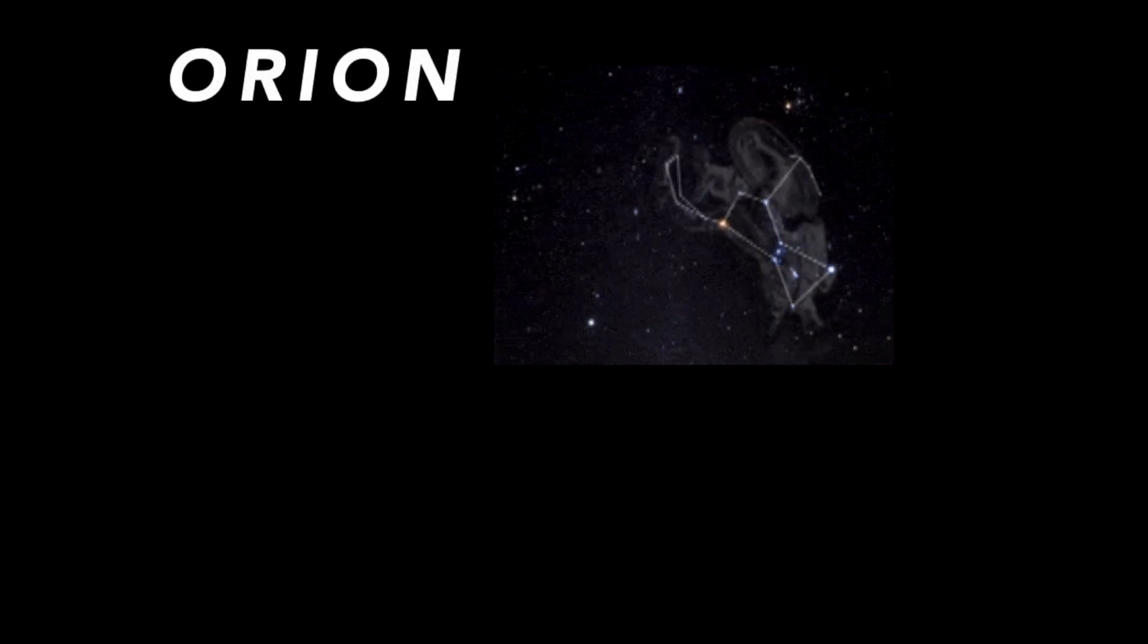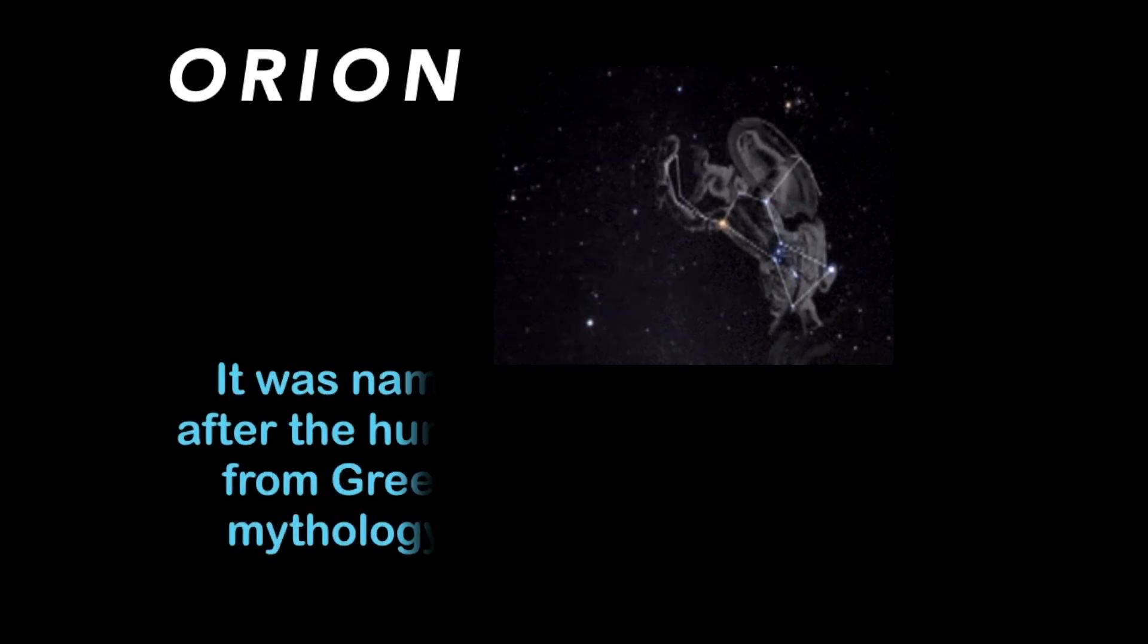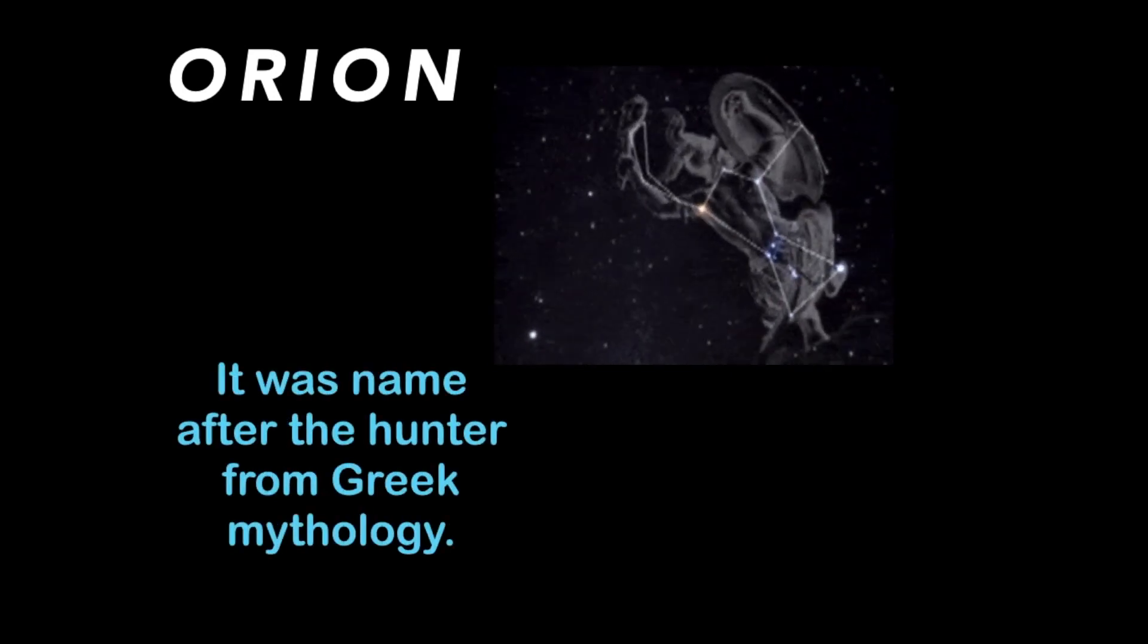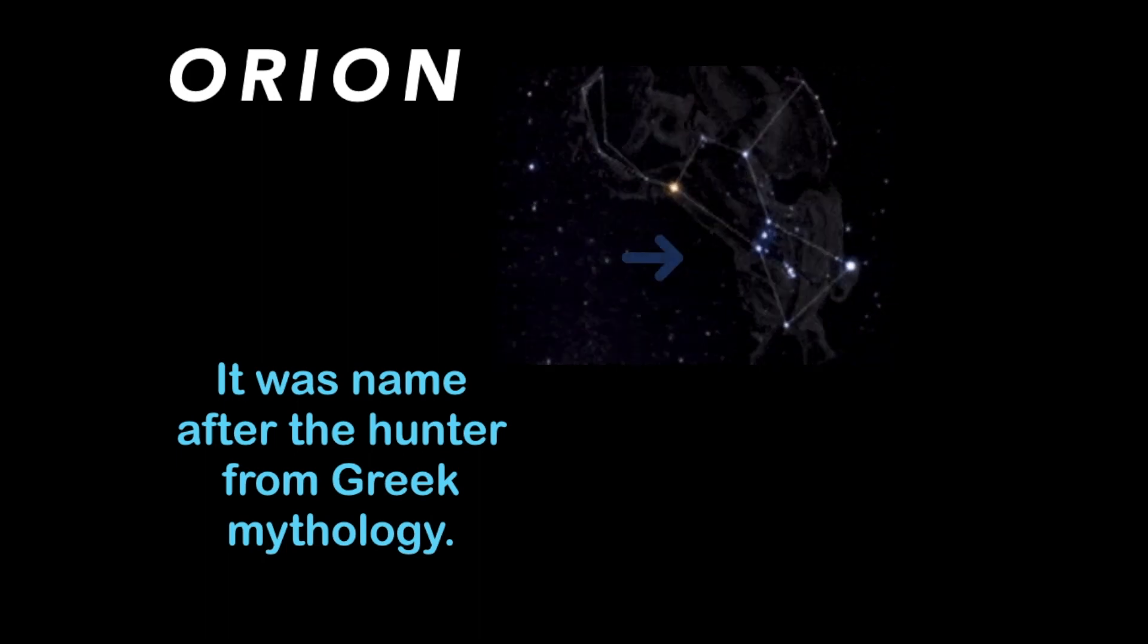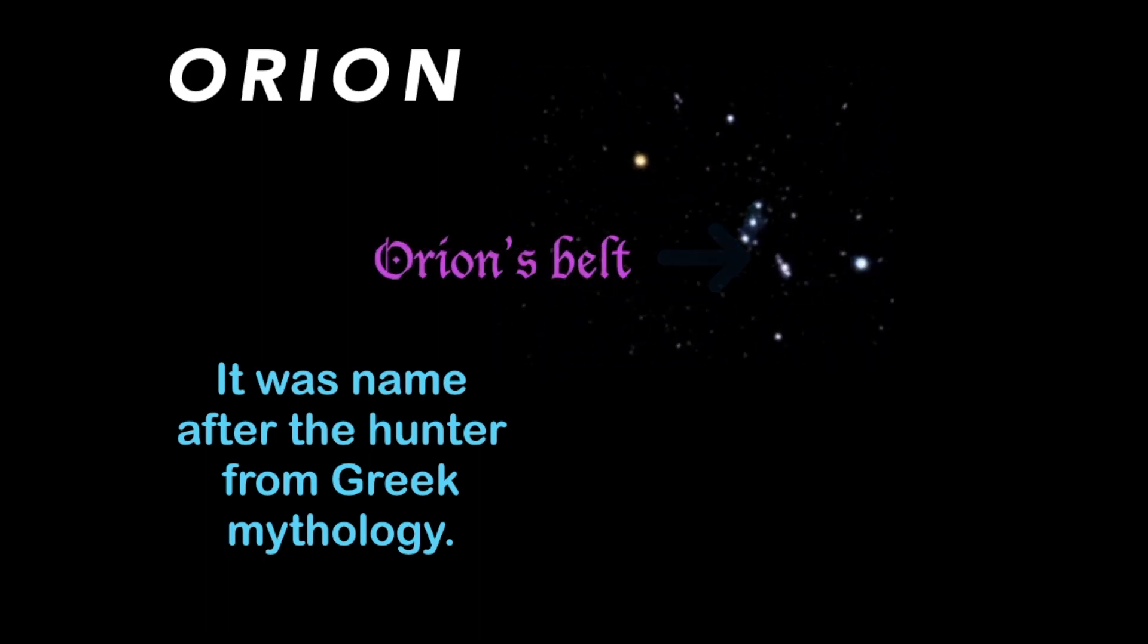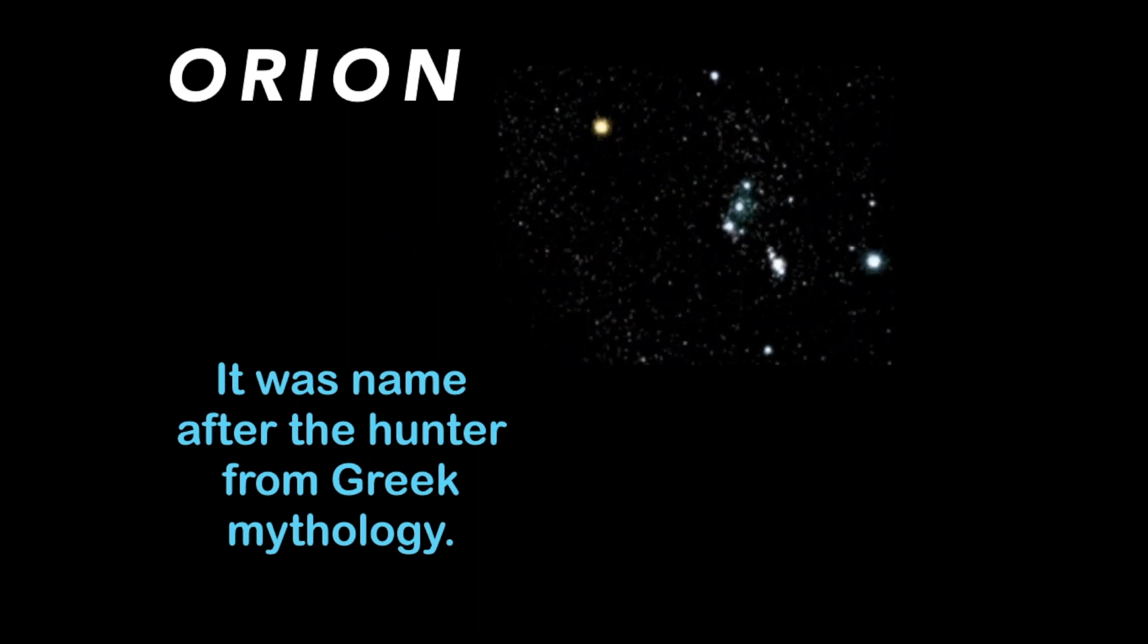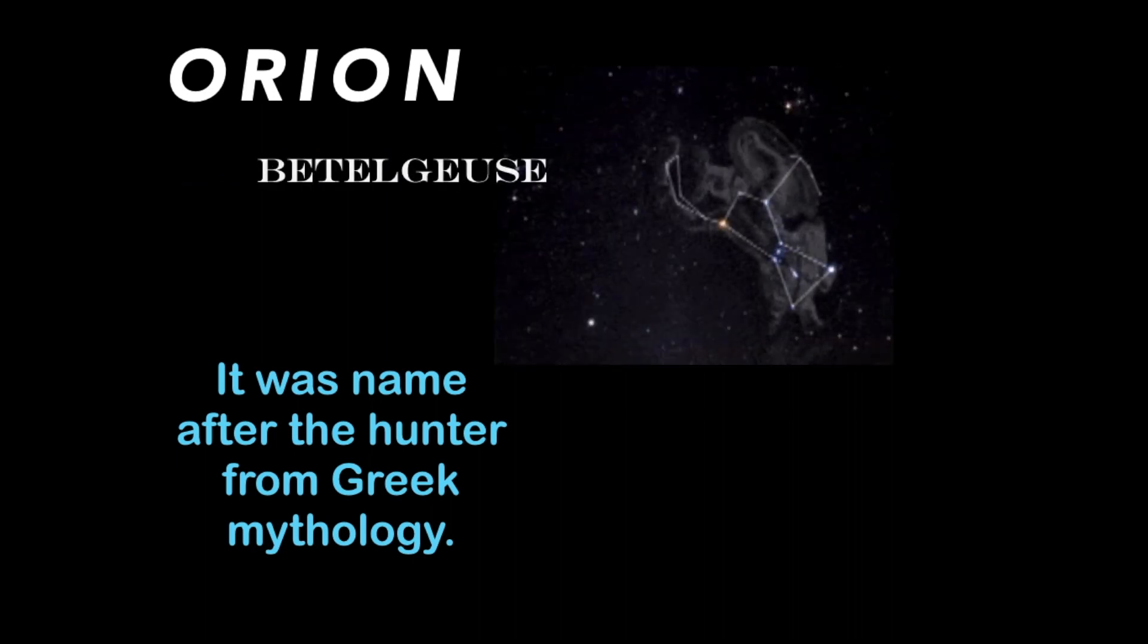Let us identify some famous constellations. Orion is one of the most visible constellations because of its location. It can be seen throughout the world and it was named after the hunter from Greek mythology. It has three little stars that form the Orion's belt and its two brightest stars are Betelgeuse and Rigel.